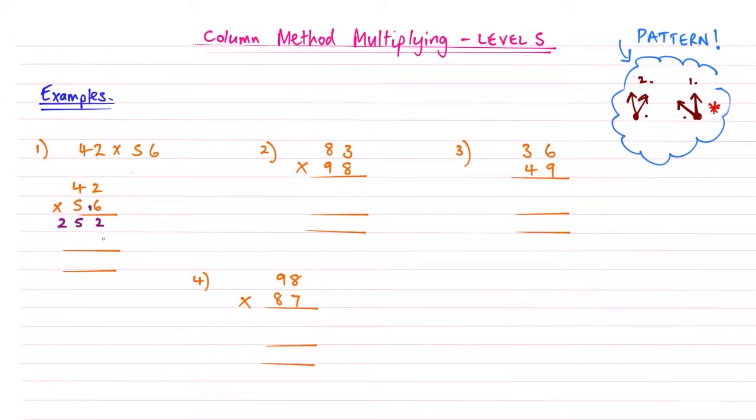Recapping from level 4, we're moving to the second part where we multiply this 5. Before we do that, remember to put a 0 because technically it's 50. For now, we'll just think of it as 5. Following the second part of the pattern, 5 times 2 becomes 10, so we put the little 1 there. Then 5 times 4 is 20, add that 1, and it becomes 21.